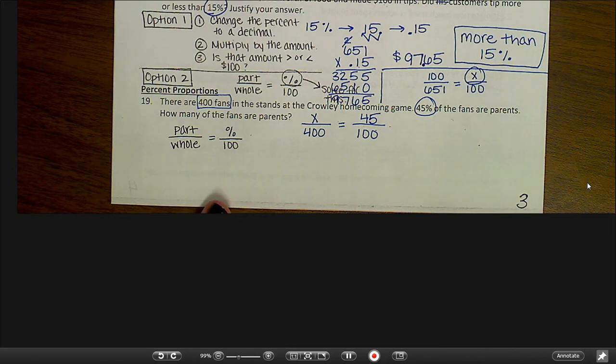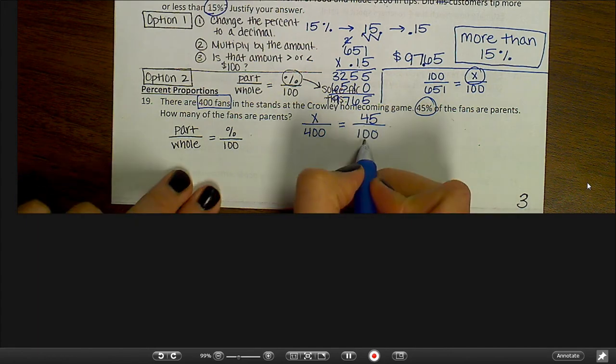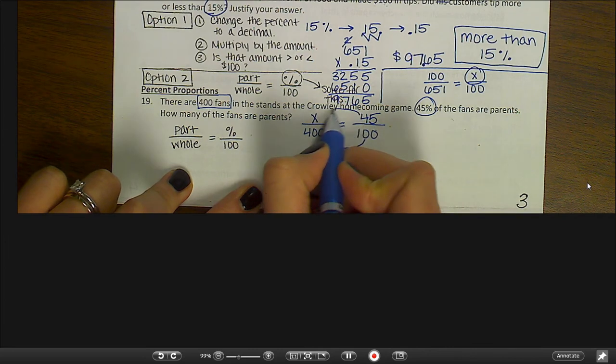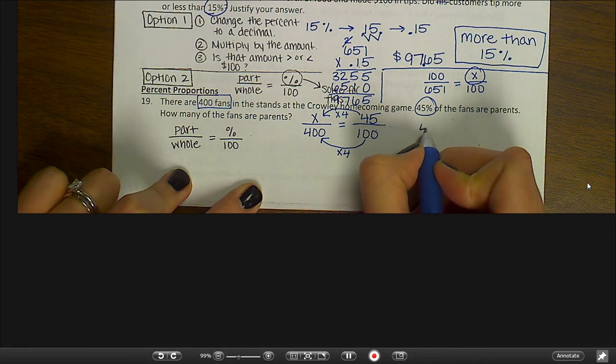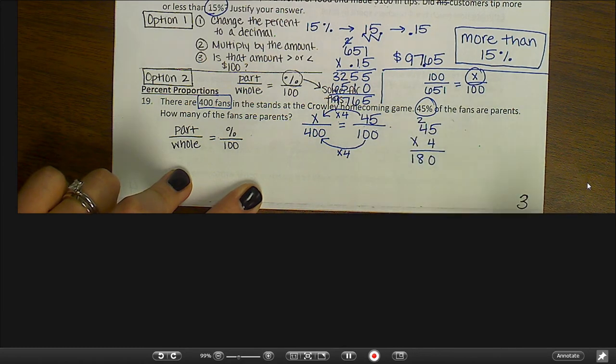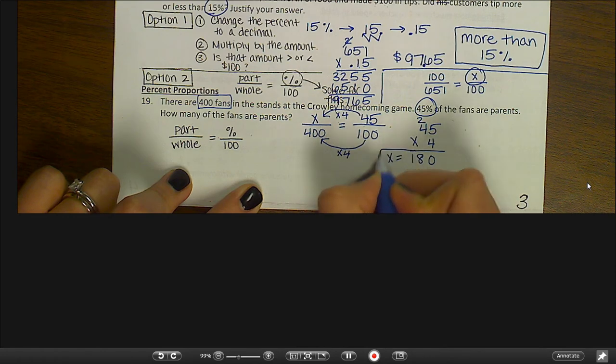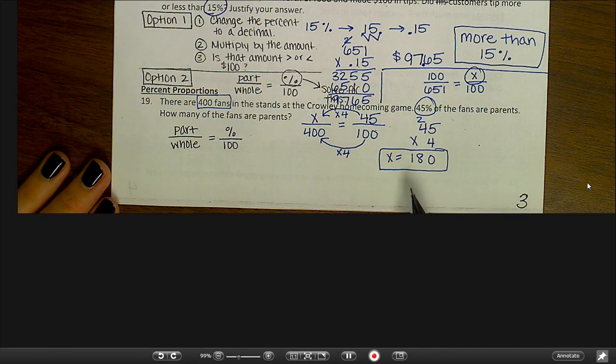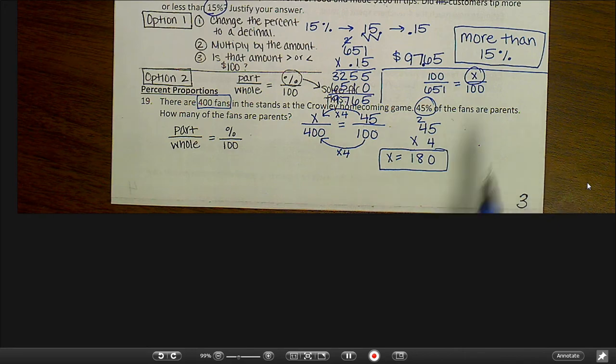So, I can either cross multiply or I can use relationships. Here I see a really easy relationship. I see that 100 times 4 will give me 400. So I know that 45 times 4 will give me X. Let's figure this out. That's 20. 4 times 4 plus 2 is 18. So it should be X equals 180 parents. Let's do a reality check. 45% of the fans are parents. That's less than half. Is 180 less than half of 400? Yes, it is. It's pretty close. But it's less than half.